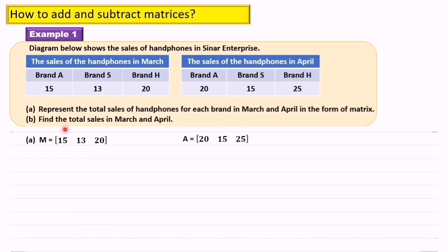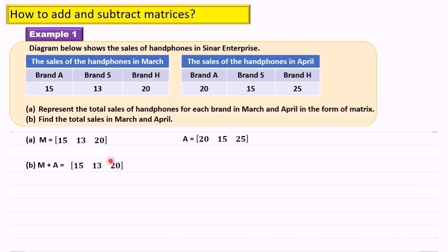Part B: Find the total sales in March and April. To find the total sales in March and April, we must add matrix M and matrix A. So this is matrix M plus matrix A.